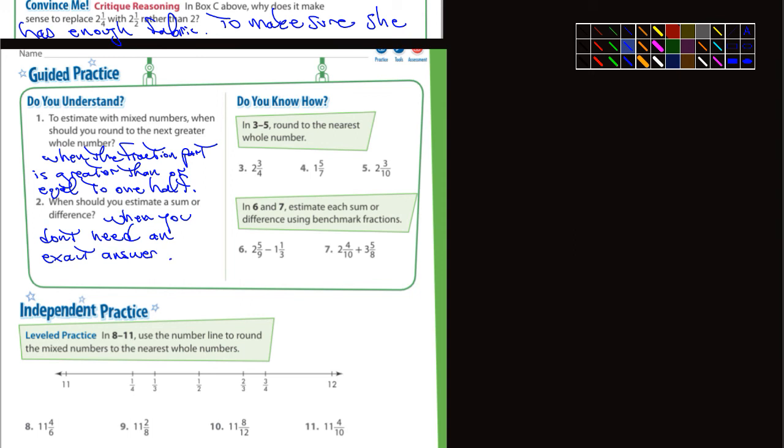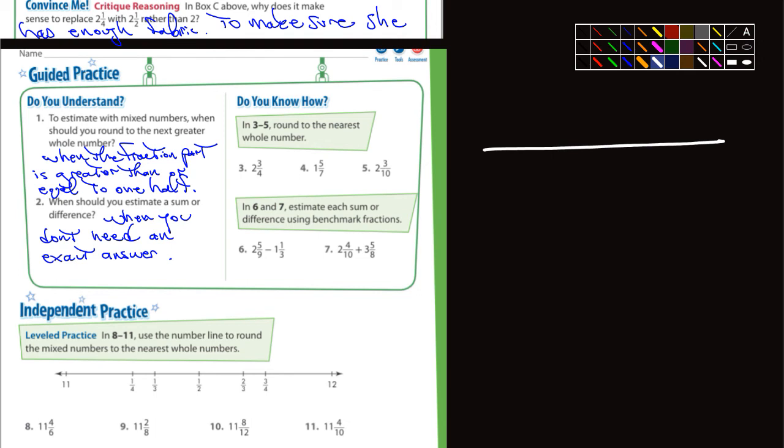Let's see here. Three through five, it says round to the nearest whole number. For number three, 2 3/4. If I was to draw 2 3/4 on a number line, here's 2, here's 3, here's 2 1/2. Two and three-quarters would be right here. What's that closer to as far as whole numbers? Is that closer to 2 or closer to 3? It's obviously closer to 3. So you would round that to 3.